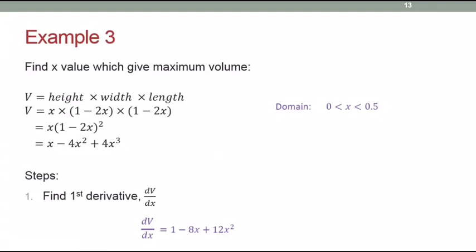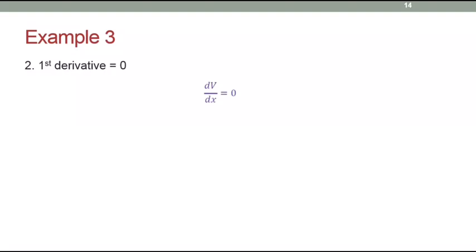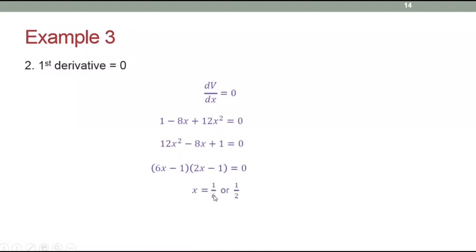Step 1: find the first derivative. Differentiating V = 4x³ − 4x² + x gives dV/dx = 12x² − 8x + 1. Step 2: set dV/dx = 0, giving 12x² − 8x + 1 = 0. Solving this equation gives x = 1/6 or x = 1/2. Since the valid range is 0 < x < 0.5 (not including 0.5), the accepted value is x = 1/6.